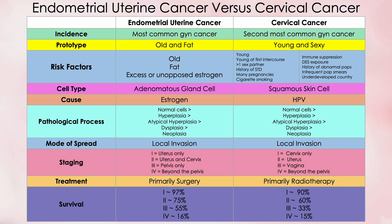The risk factors for these two cancers are also quite different. For endometrial uterine cancer: being old, being fat, and taking or making excess or unopposed estrogen. For cervical cancer: being young, early age at first intercourse, having more than one sex partner, history of a sexually transmitted disease, many pregnancies, cigarette smoking, immune suppression, DES (diethylstilbestrol) exposure, history of abnormal pap smears, infrequent pap smears, and living in an underdeveloped country. Hugely different for two cancers in the same organ.